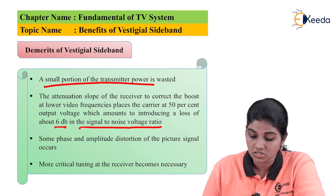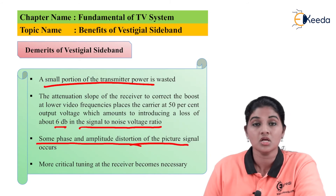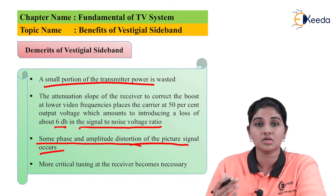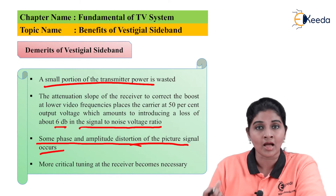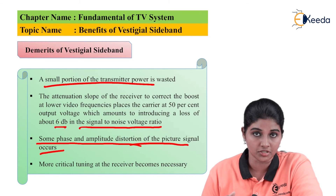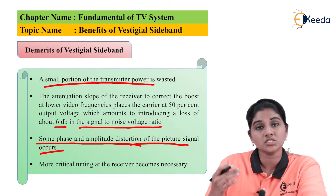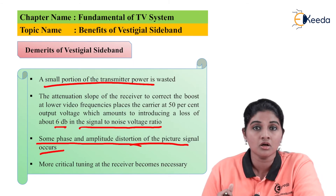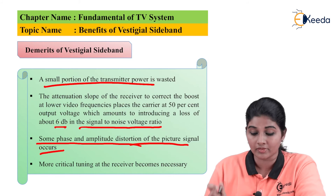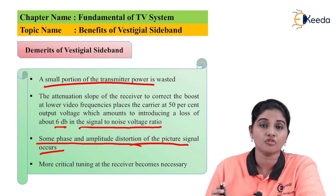The next disadvantage is that some phase and amplitude distortion of the picture signal occurs. This is because it is very difficult sometimes to tune the IF amplifier present in the receiver of the TV system, and therefore some phase and amplitude distortion is introduced in the system, which is considered one of the disadvantages of VSB.